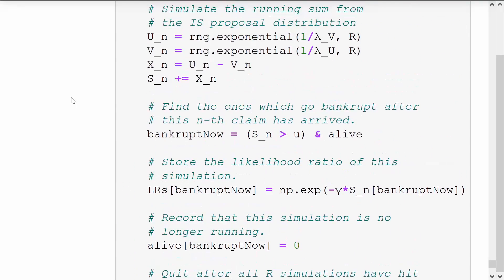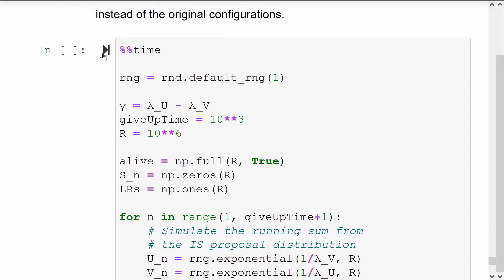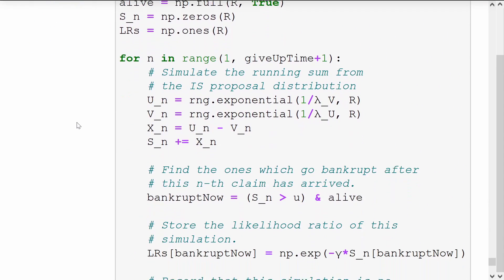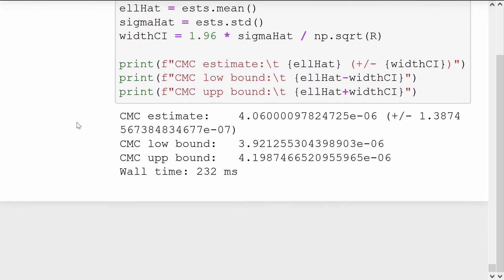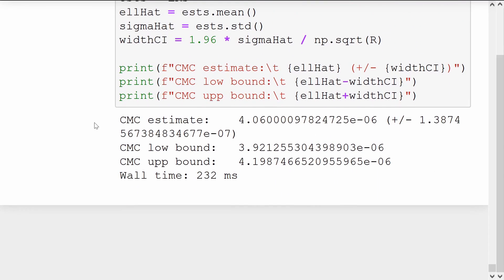Let's run this now. Firstly, the time that it took to run this importance sampling scheme is much less than the crude Monte Carlo. That took about 6 or 7 seconds. This one is in milliseconds.